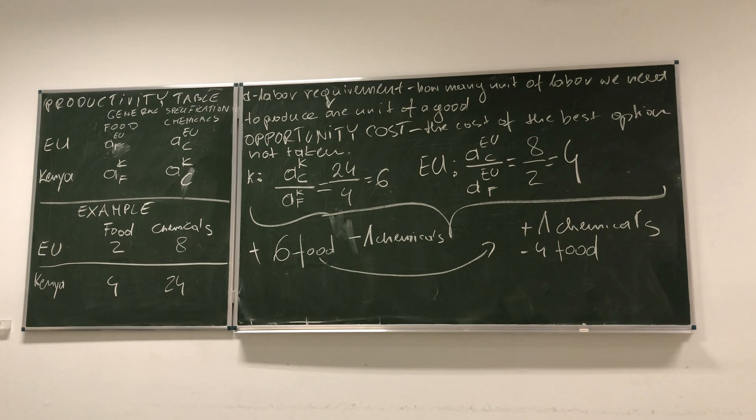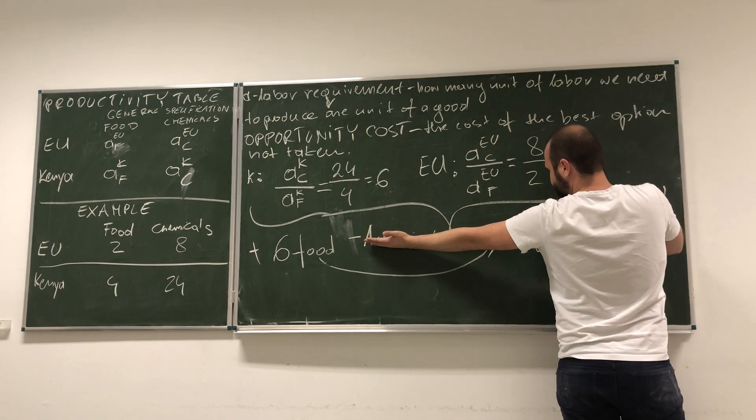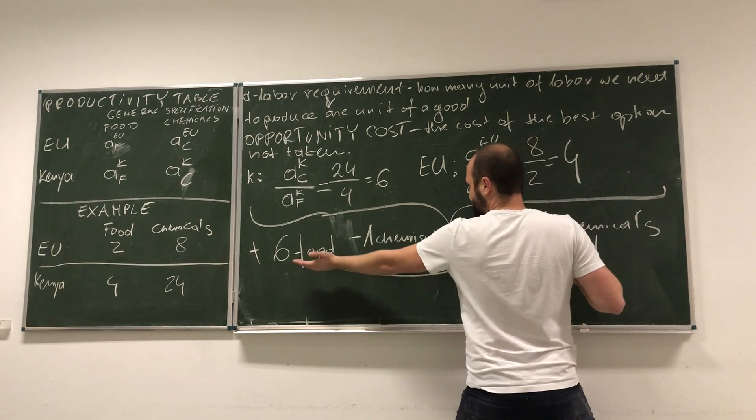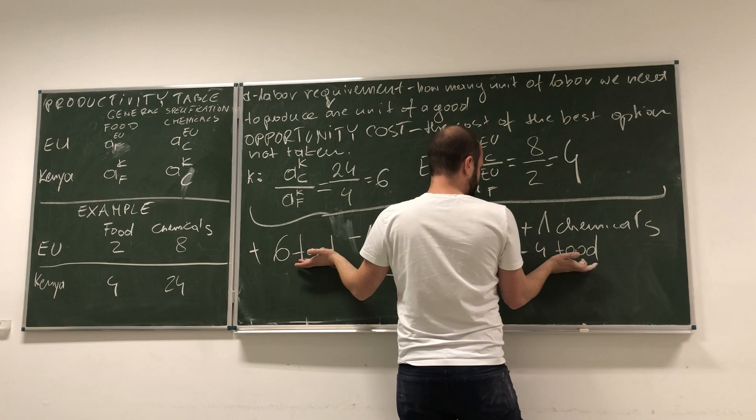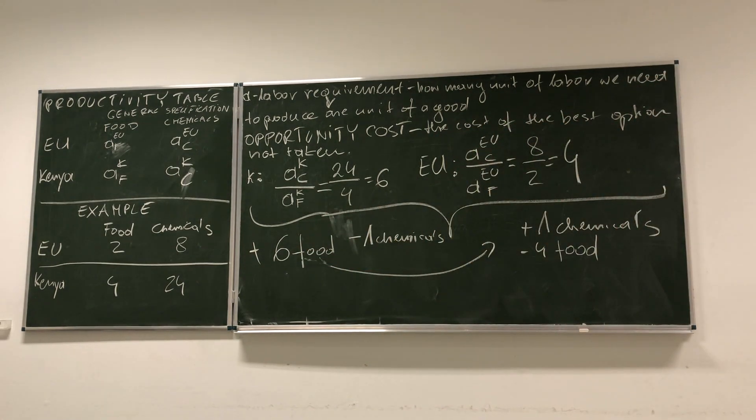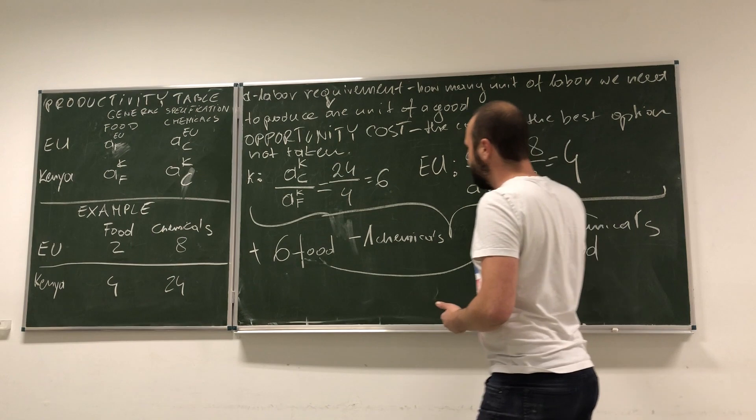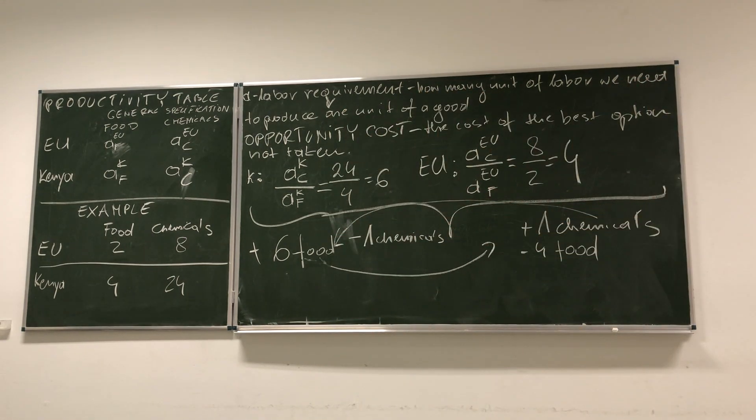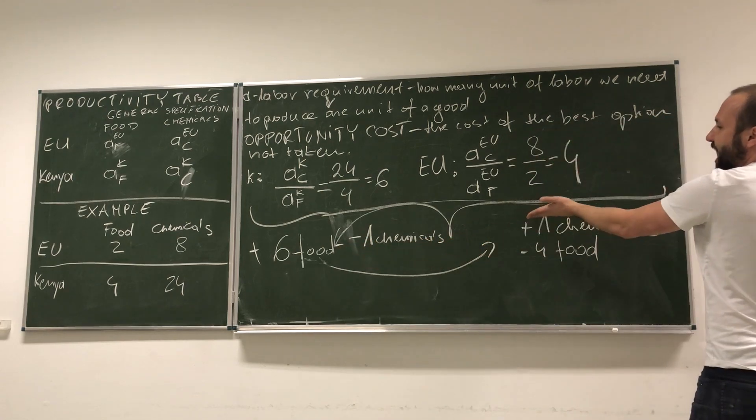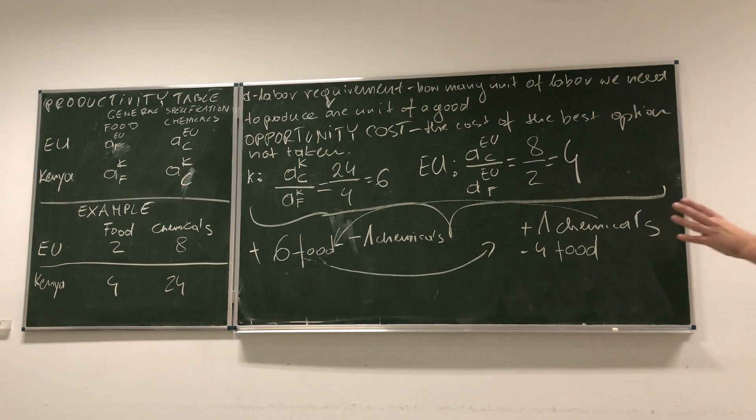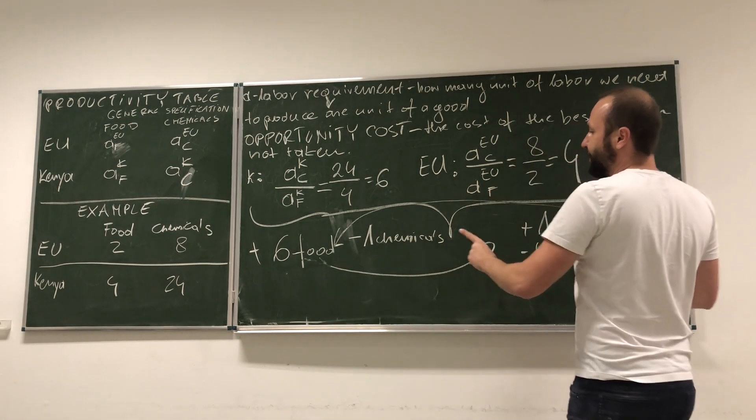Over here we have four less units of food. So, what has happened to the world level of production? Look, the number of chemicals the world is producing is still the same, but the number of units of food has increased by two, right? Because Kenya is producing less chemicals, more food, EU is producing more chemicals, less food. So, look, we can imagine the situation that this one additional unit of chemicals would be sold to Kenya. And let's just say, for example, for five units of food. And then, both countries would have the same chemicals as we did in the beginning, but we both have one more unit of food.